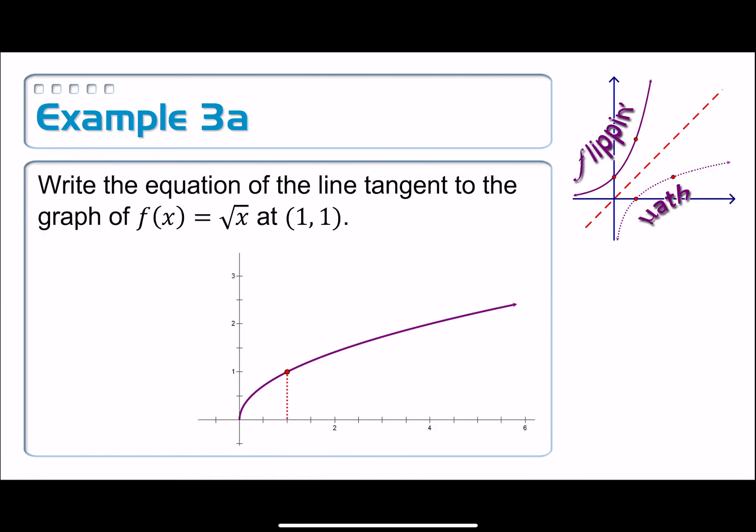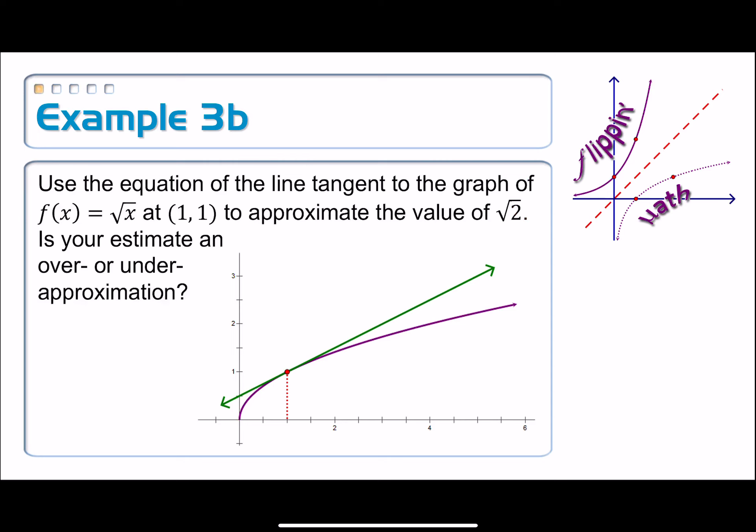Alright, then let's look at the second part of this. Example 3, Part B. There was the graph there. I didn't have to do it on Desmos. Use the equation of the line tangent to the graph of f(x) equaling the square root of x at (1, 1) to approximate the value of the square root of 2. Is your estimate an over or an under approximation?